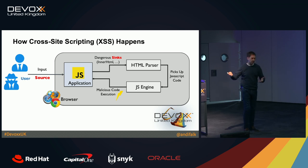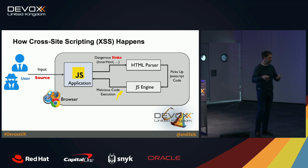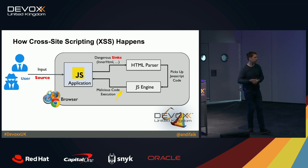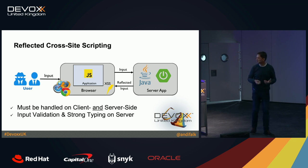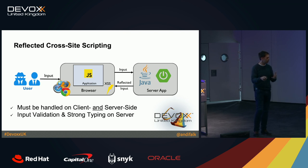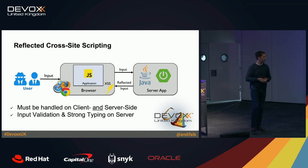The browser doesn't care whether the JavaScript is really from the application or from user input — that's how cross-site scripting happens, and with that you can really do bad things. There are three different types. The first is reflected cross-site scripting: the input flows to the back-end application, which just returns it without validation, and it gets into the dangerous sink again. This must be handled on both the client and server side. It's really good to put drastic input validation on the server side so it's not possible to just send any JavaScript snippet to the server.